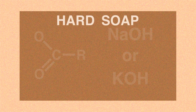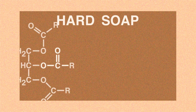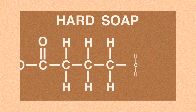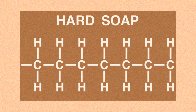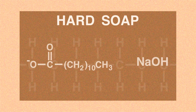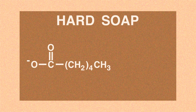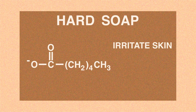Typically, hard soaps are made when fatty acid esters with R groups containing 12 carbons or more use sodium hydroxide in a saponification process. Fatty acid esters with 6 carbons or less are not used as they irritate the skin and smell pretty funny.